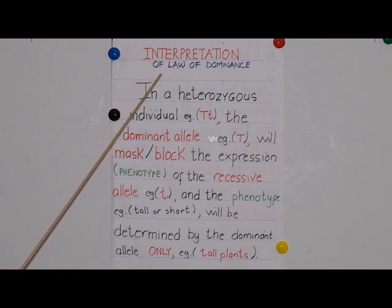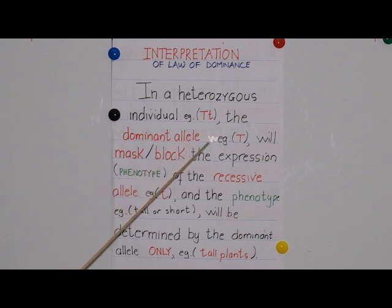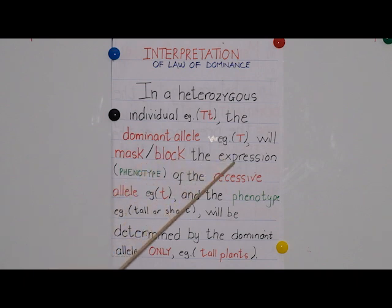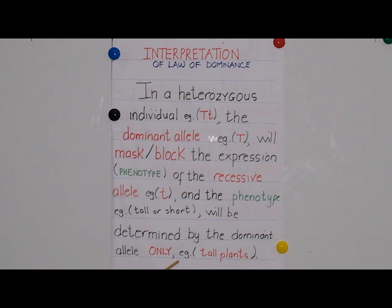Interpretation of Mendel's law of dominance: in a heterozygous individual — for example, capital T, small t as the genotype — the dominant allele, for example capital T for tall, will mask or block the expression of the recessive allele, for example small letter t for short. The phenotype will be determined only by the dominant allele. In other words, the dominant allele will be expressed in the phenotype while the recessive allele will be blocked.